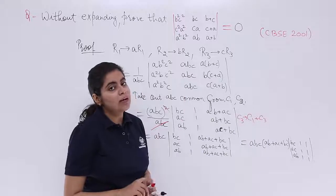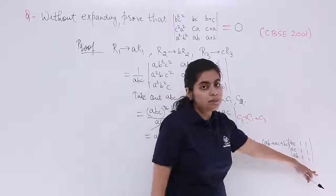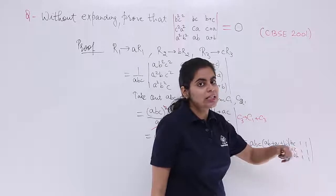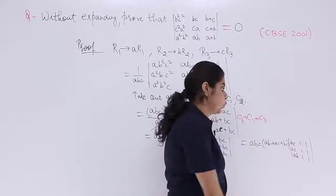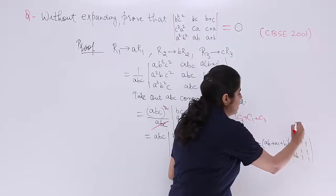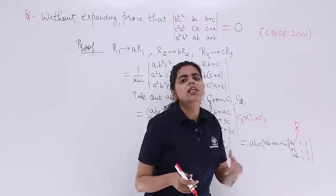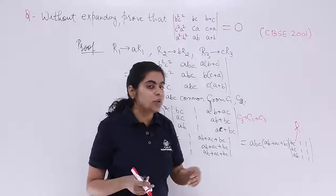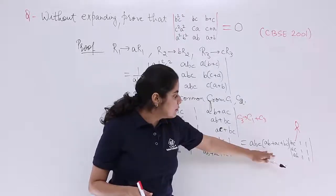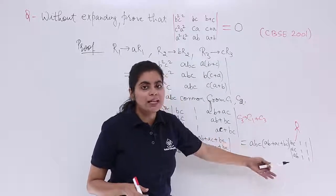Now you know that from the properties that we've studied, if two columns or any two rows are identical, the value of determinant is 0. So this determinant gives me the value of 0. 0 multiplied by any two things or three things or four things which are not 0 is 0 only.